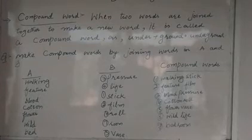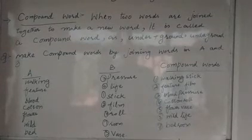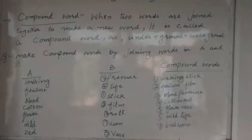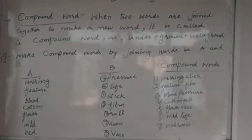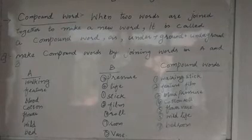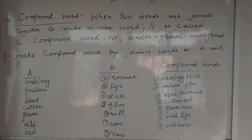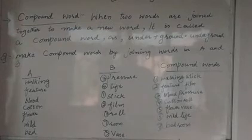दूसरा word है feature. Feature column A का word है और column B में हमने देखा कि इसका suitable word film है। मिल के हमने यह word feature film बनाया। तो feature के लिए film — compound word: feature film.